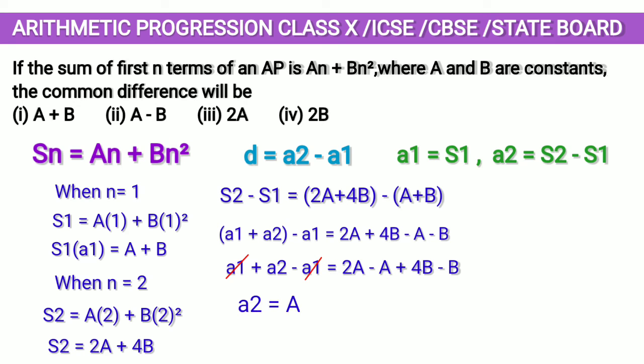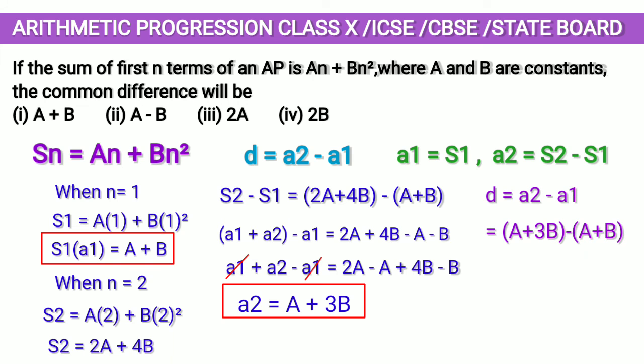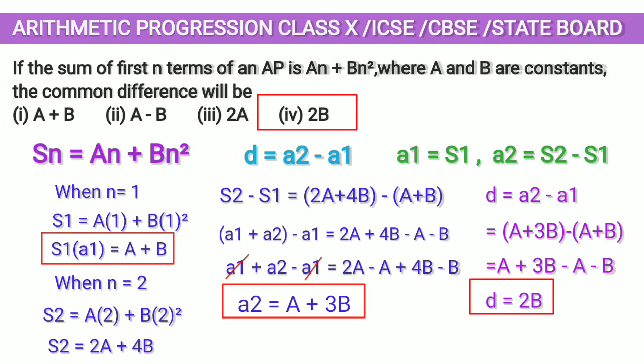Now we have a1 and a2, we can find D. So D = a2 - a1. Let us substitute the results of a2 and a1 in this, and we have D = 2b. Option 4, 2b is the correct answer.